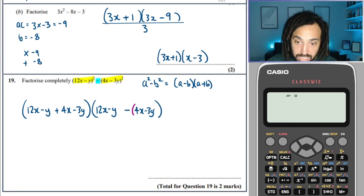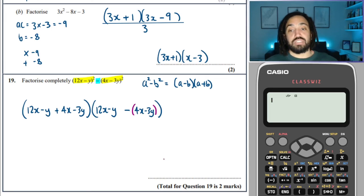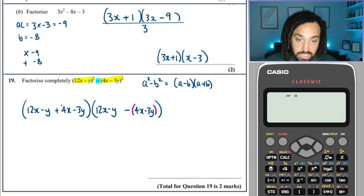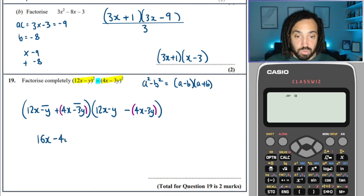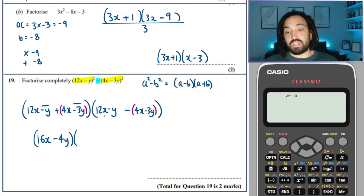And, you know, essentially this one as well. But when you're adding, it doesn't matter. Okay, so what's this going to give me? Let's look at the left-hand bracket first. We've got 12x and a 4x. That makes 16x. And then we've got a minus y and a minus 3y, which makes minus 4y.